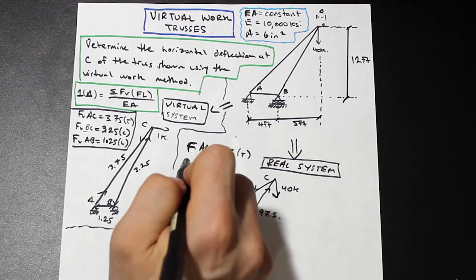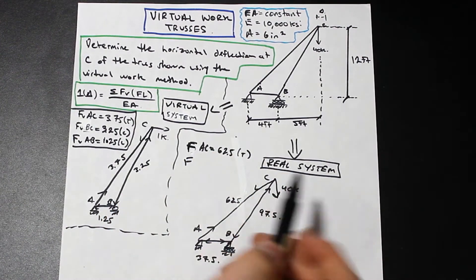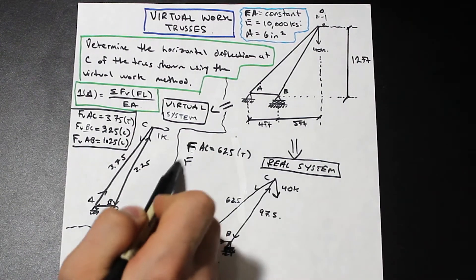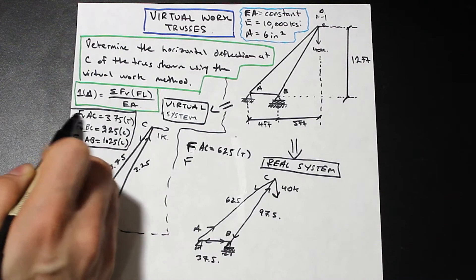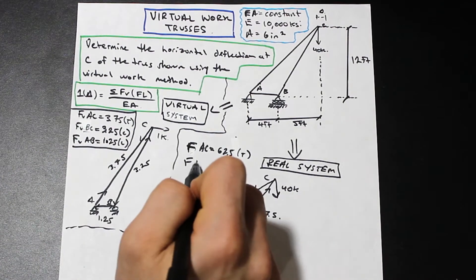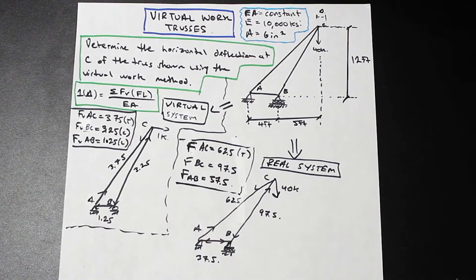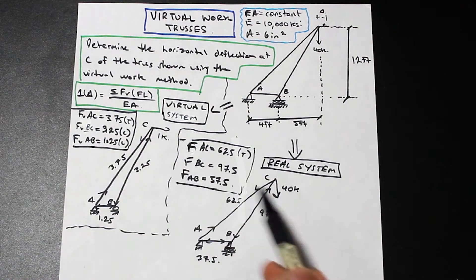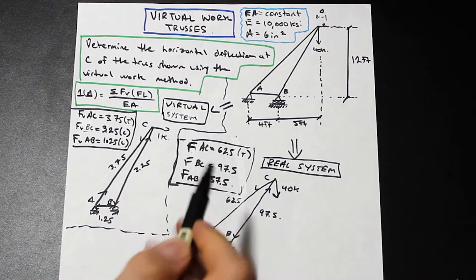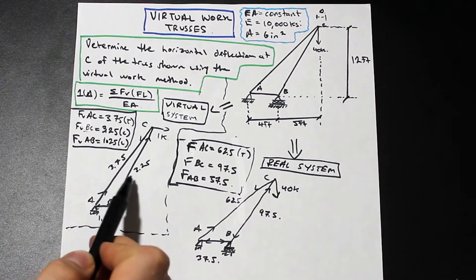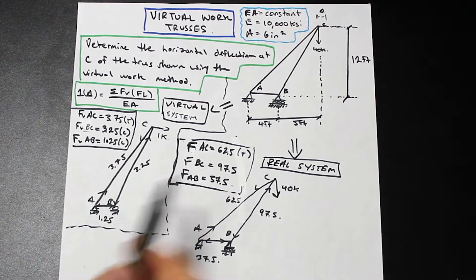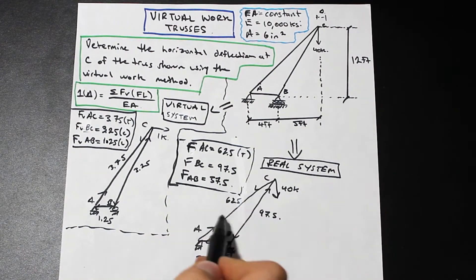Let me write those down for you. Now in this case, as you can see, we're using F, we're not using FV, because now this is the real system. So we're going to denote the real system as F and the virtual system was FV. So those are the first two steps that we need to do, and those are done now.